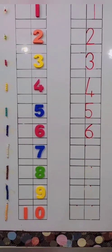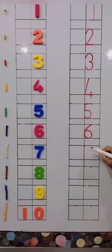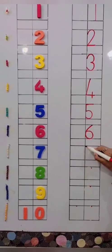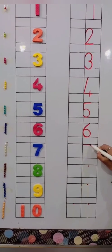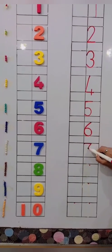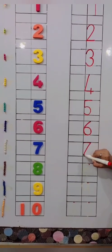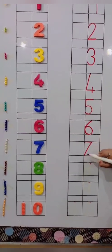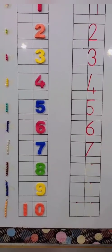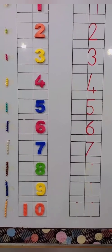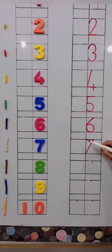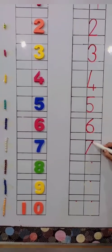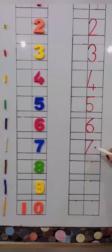What's come after 6? 7. 7 is like a 7 up. 7 is like a 7 up.